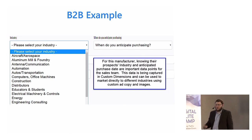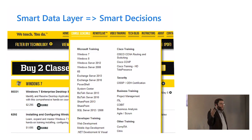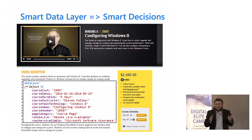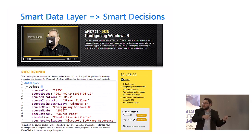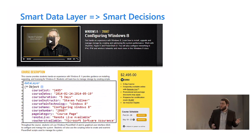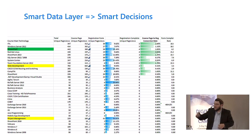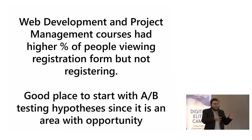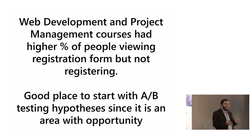Here's an example of a company that does online and in-person training for Microsoft, Cisco, web development, and project management. They didn't have visibility into which sorts of courses people were looking at in relationship to whether they were registering. By adding a data layer, they were able to see how many people go from a course page to registration form to completing registration by technology. What we ended up seeing was that web development and project management courses had a much higher abandonment rate — it told the story of their business.